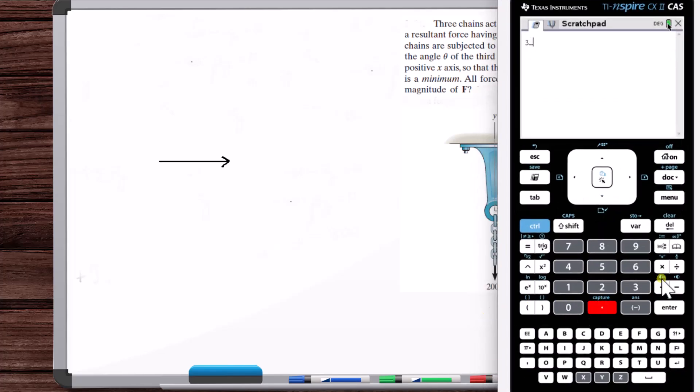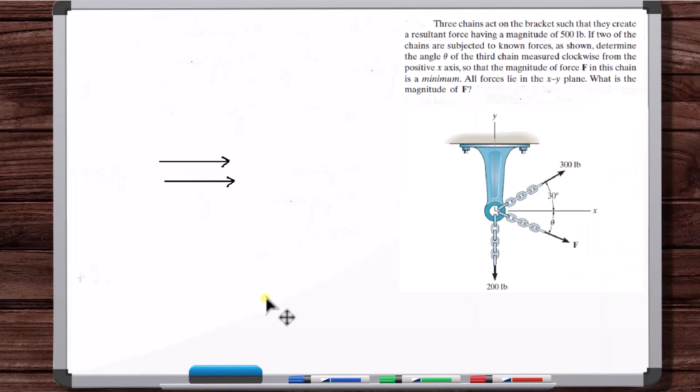That's 200 pounds and then 300 divided by 200, 1.5. So the 300-pound vector will be 1.5 times the length of this vector. Now, let's draw the Y-axis and the X-axis. The 200-pound vector is acting straight up and down like that. And then the 300-pound vector is acting at 30 degrees like that.